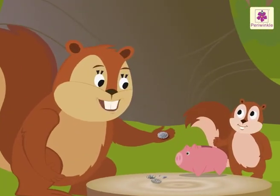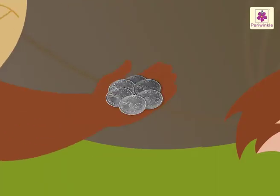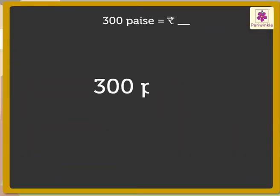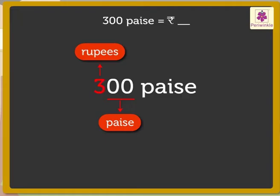Okay mom. Now, let us convert paise to rupees. Let us see how many rupees do three hundred paise make. Look at the first two digits from the right — these two digits show paise. So, here the last two digits, that is zero and zero, show the paise. The remaining digits show the rupees. So, digit three shows the rupees. We say that three hundred paise is equal to three rupees.